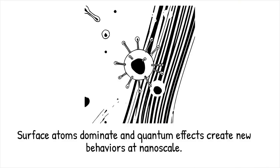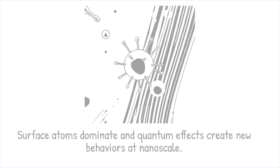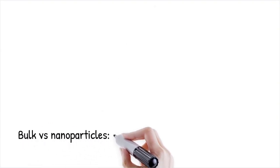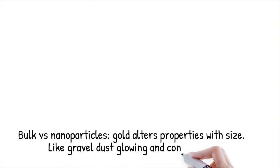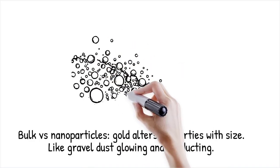Bulk gold is yellow and inert, whereas gold nanoparticles under 100pm appear ruby-red and catalytically active. It's like gravel that, when ground to dust, suddenly glows in the dark and conducts electricity.